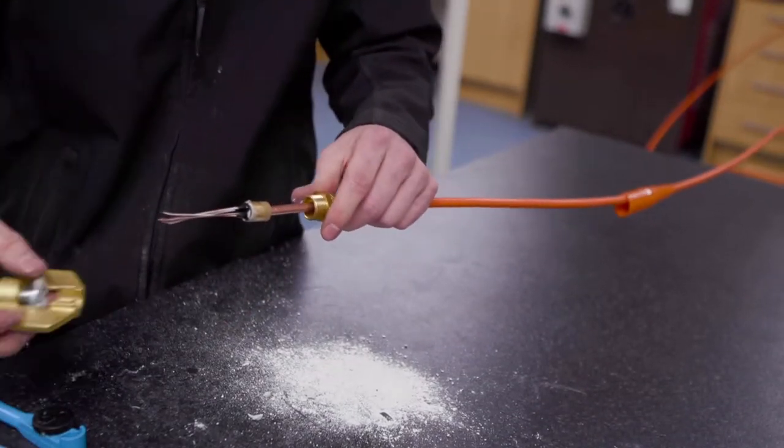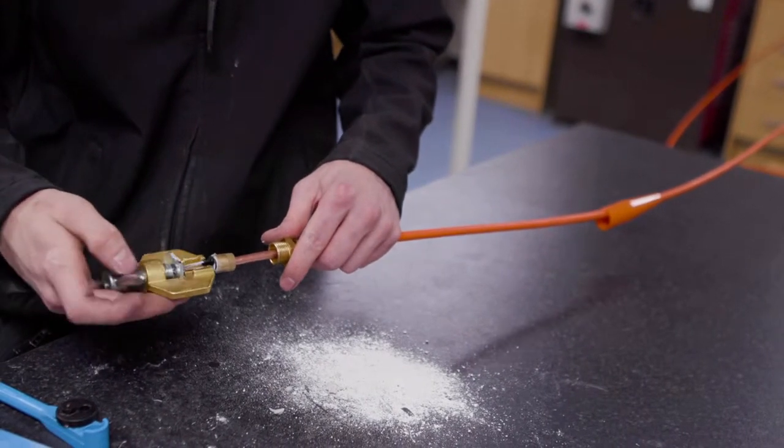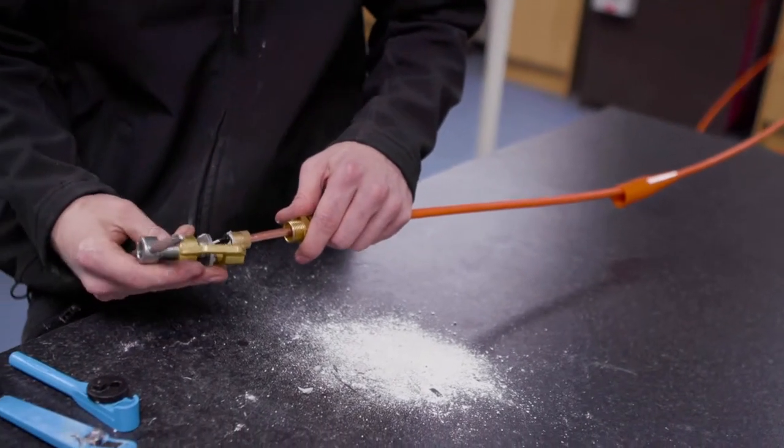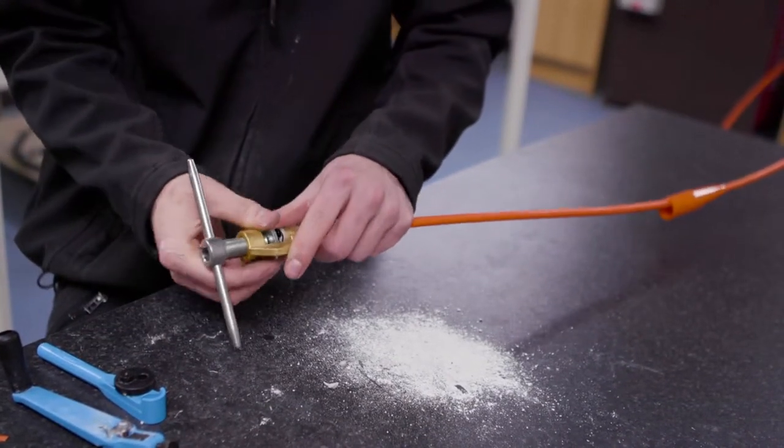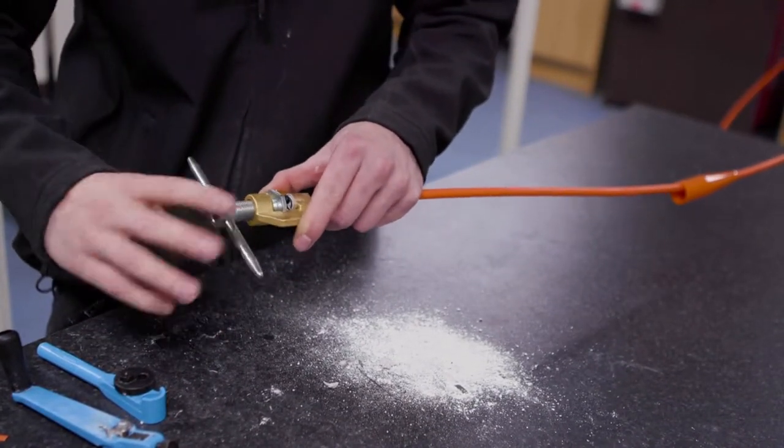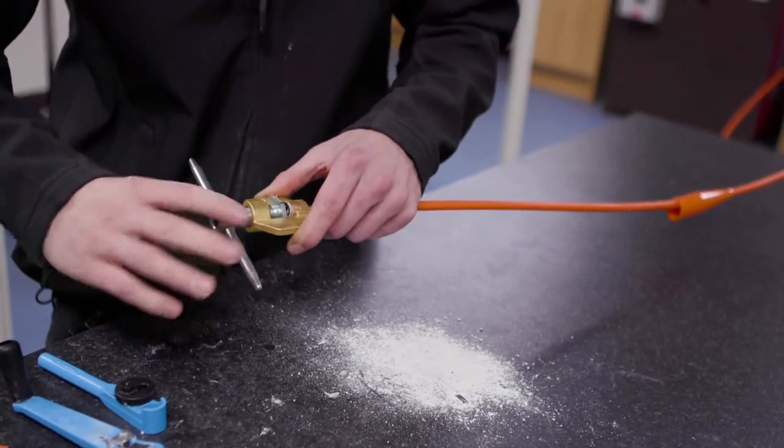Then we'll get our hand crimp, push the conductors through the middle, lock it into place and tighten it up by hand. It only needs to be hand tight.